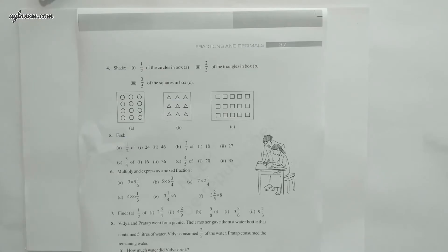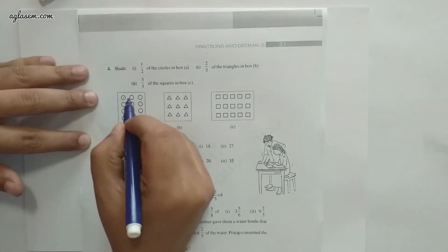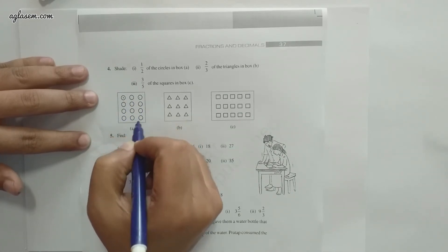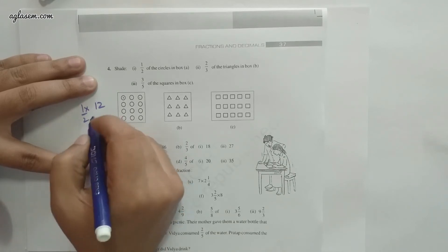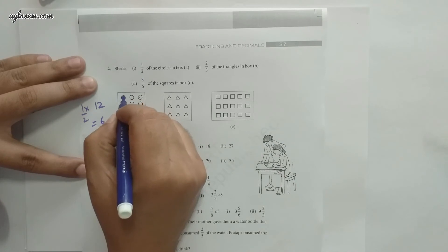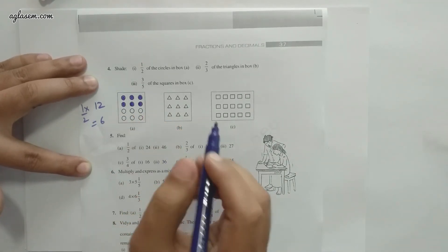Question number 4 says: shade 1/2 of the circles in the box, 2/3 of the triangles in the box, and 3/5 of the scales in the box. The key is figuring out how many shapes to shade. For circles: I count 12 circles total. Half of 12 is 1/2 × 12 = 6. So I will highlight 6 circles — a simple multiplication of a whole number by a fraction.